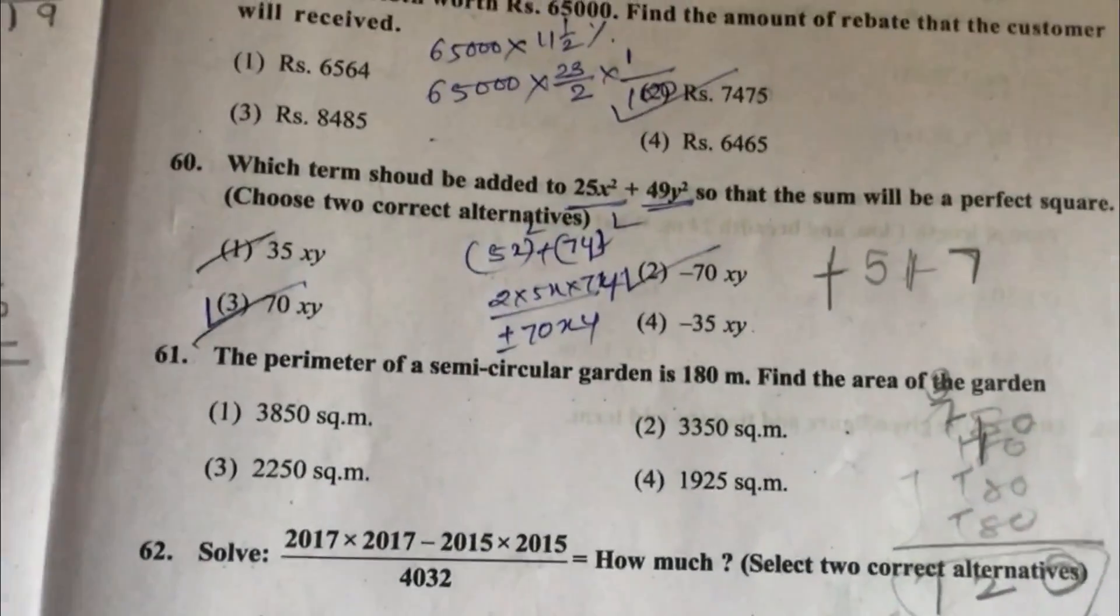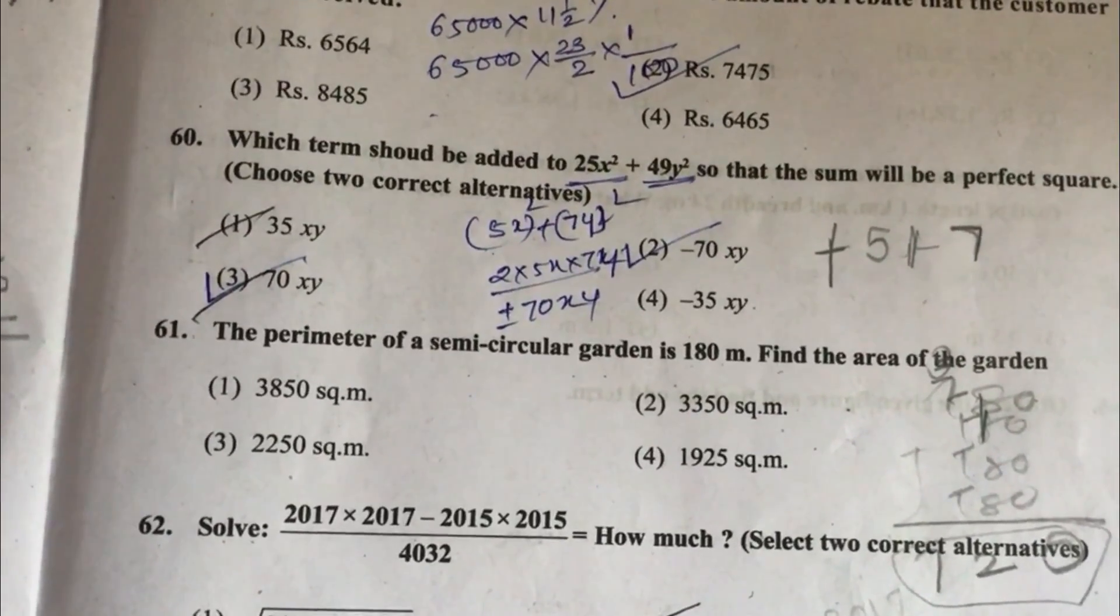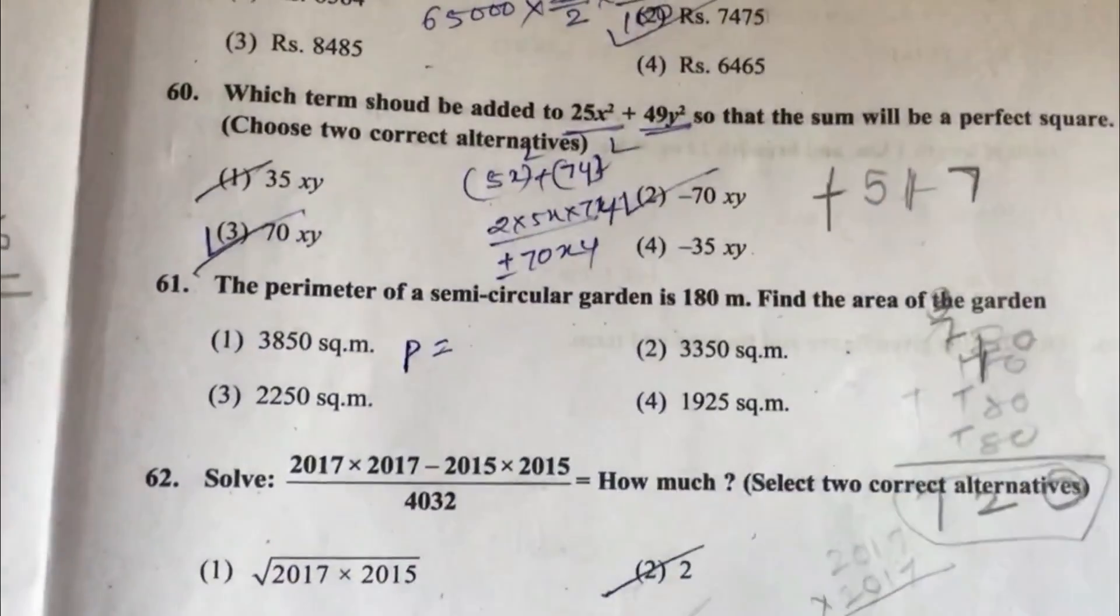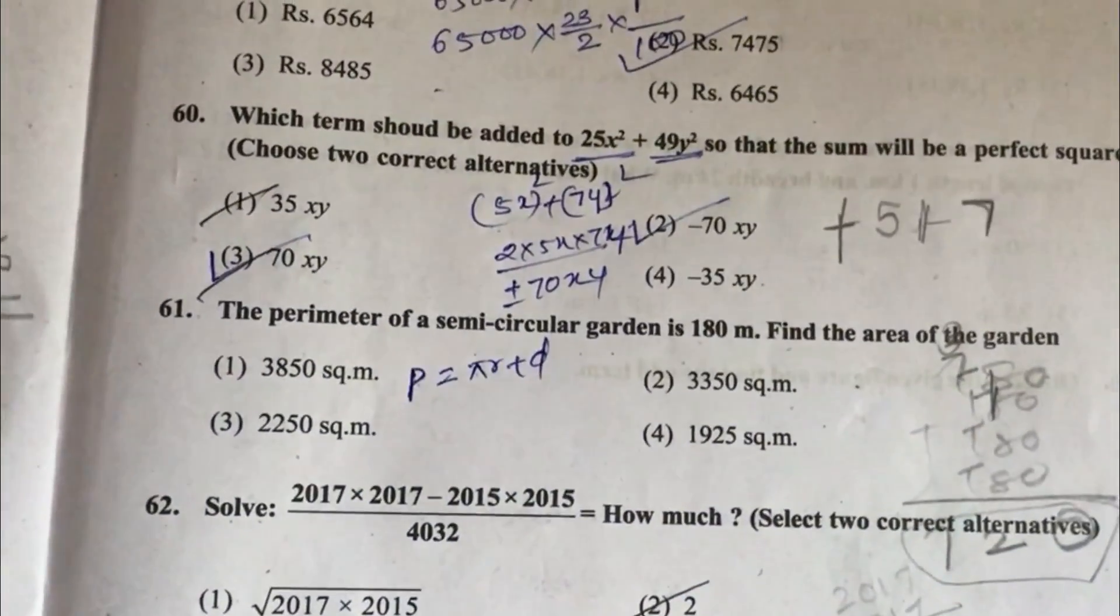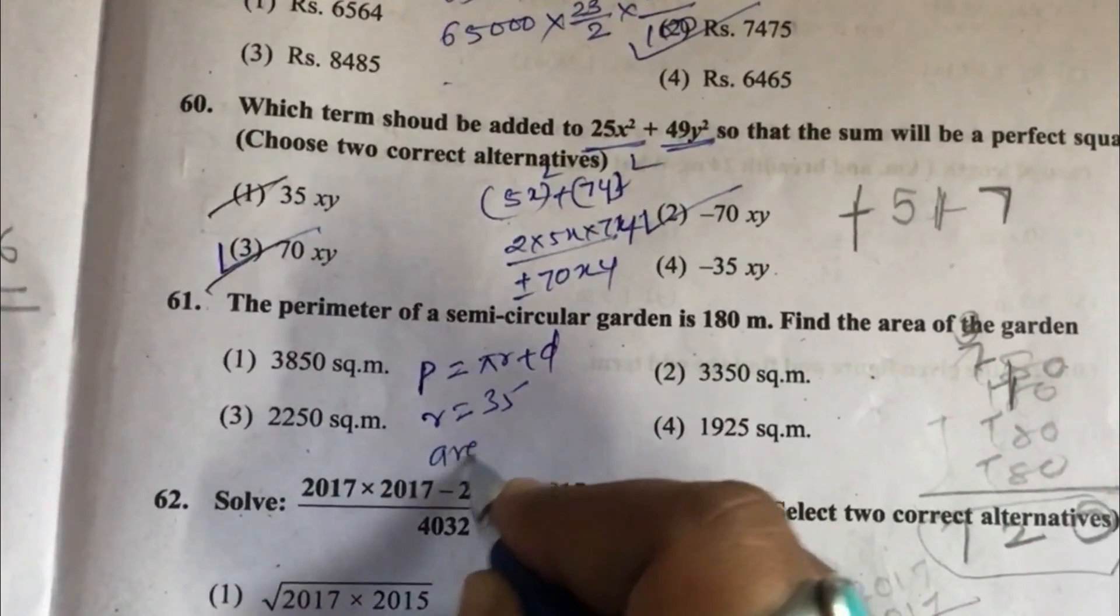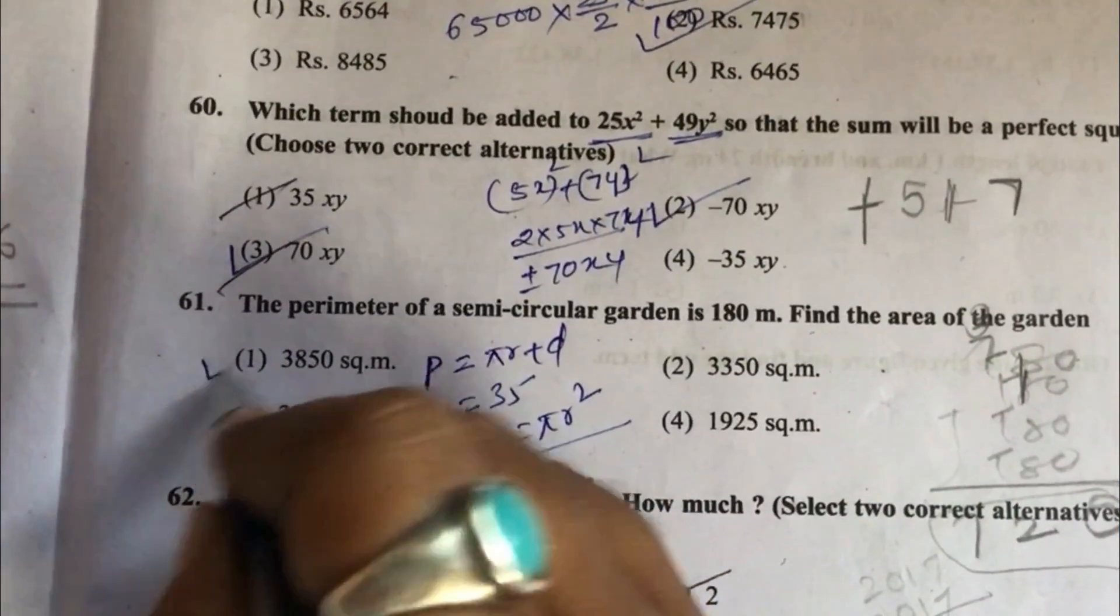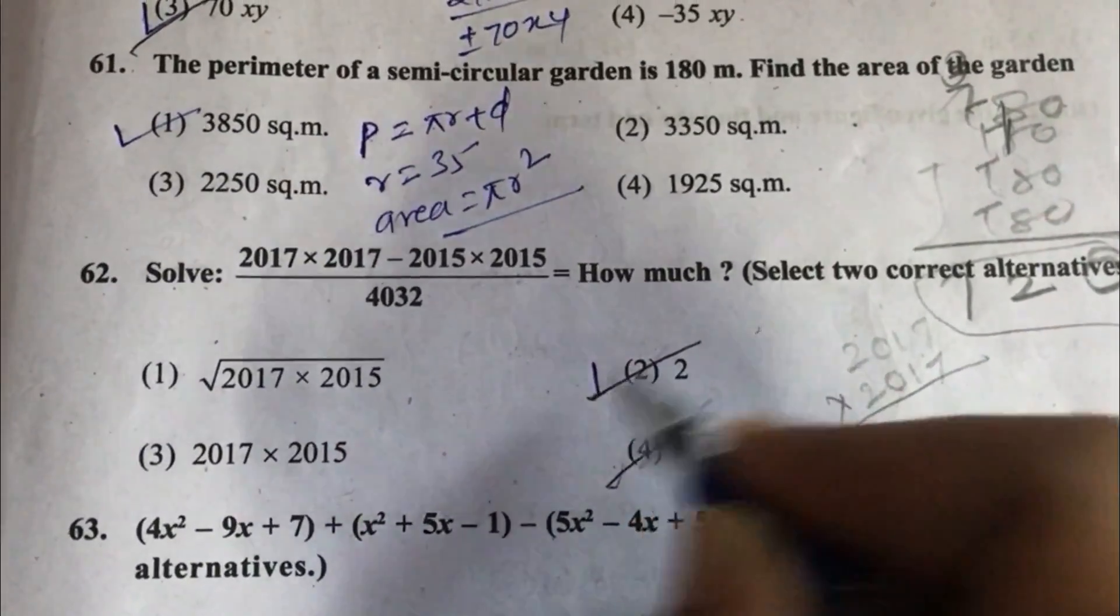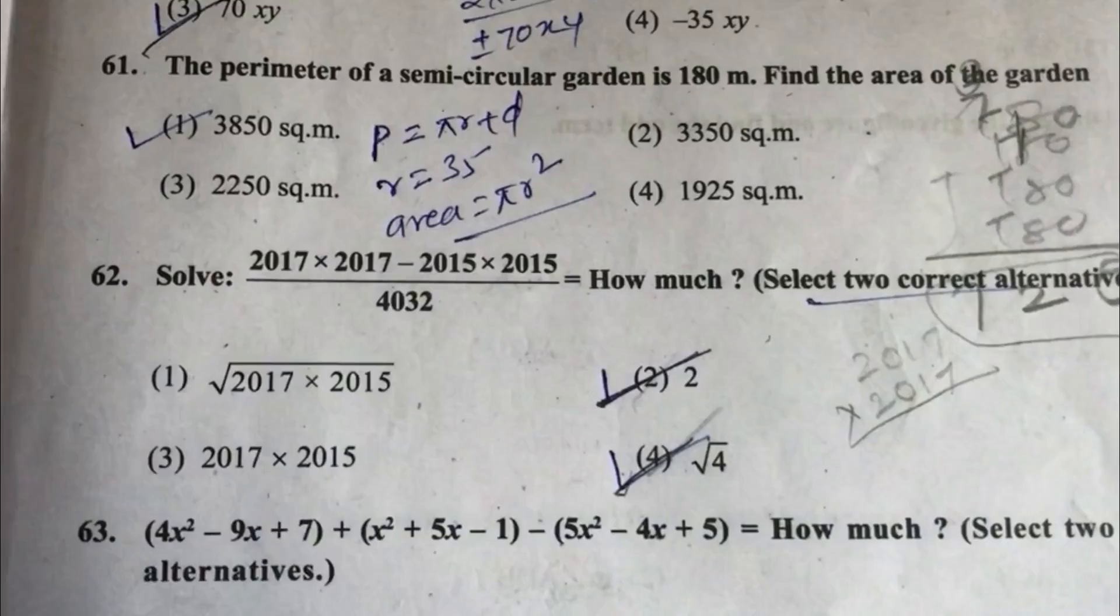Question 61: The perimeter of a semicircular garden is 180 meter. Find the area of the garden. Perimeter of semicircle is pi r plus d equals 180. We will get r equals 35. Area is pi r square. On solving, we will get option 1. Question 62: Solve this equation. For this answer is 2. We have to select two correct alternatives, so it is root 4, option 2 and 4.